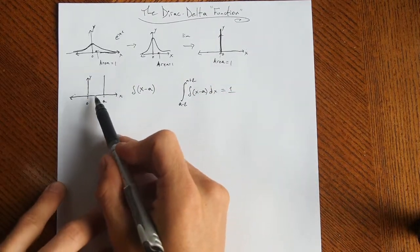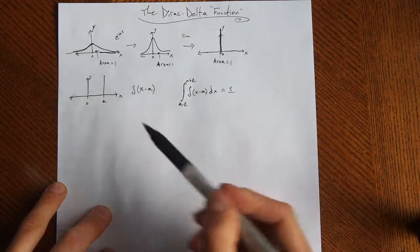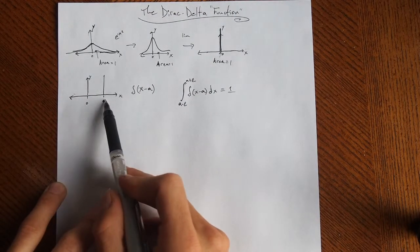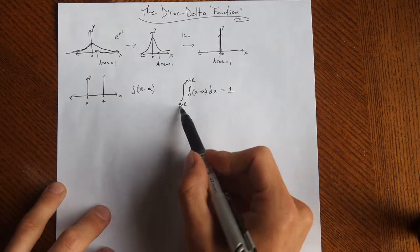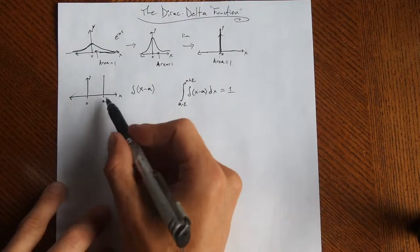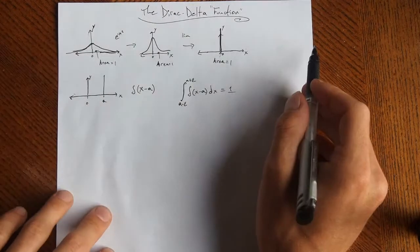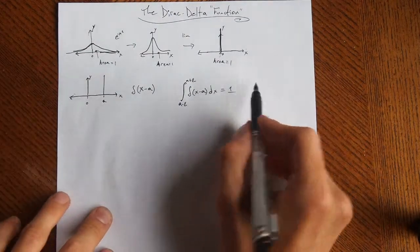It's obvious to see that it's zero everywhere, so if we integrated from negative infinity all the way up to anywhere before a, all the way up to a minus epsilon, that would equal zero. And similarly, if we integrate anywhere past a, so a plus epsilon to positive infinity, that would give us zero.